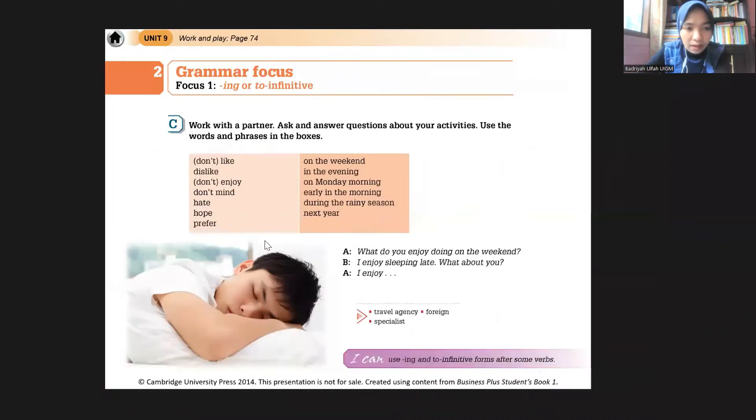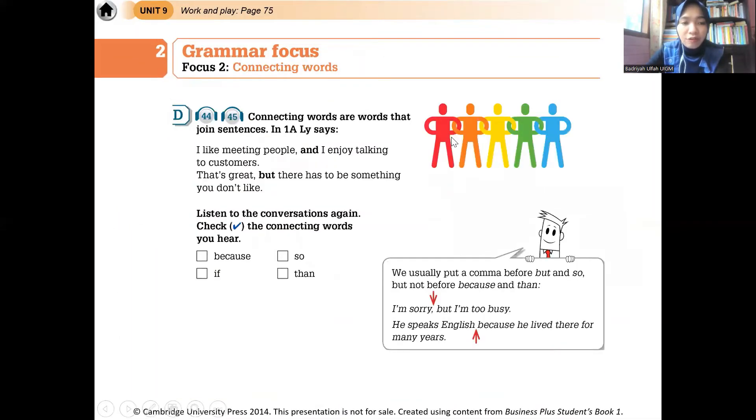Now, let's see. That's the first grammar that we will learn. Itu yang pertama. Lalu, yang kedua. Ini masih sama ya. -ing and to infinitive. Yang kedua, yang mau kita pelajarin grammar kedua, adalah connecting words. Jadi, connecting words ini maksudnya adalah kata yang menghubungkan kalimat, kata penghubung. Jadi, sama seperti di dalam bahasa Indonesia. In English, we also have connecting words. Jadi, kata penghubung juga. Sama juga seperti di Indonesia.